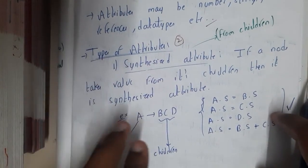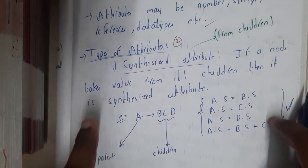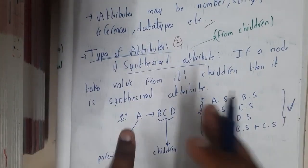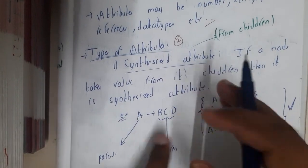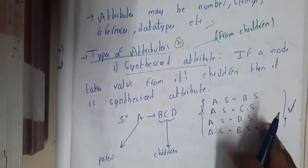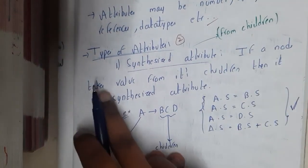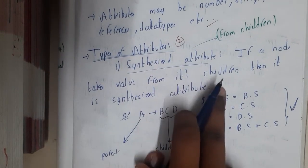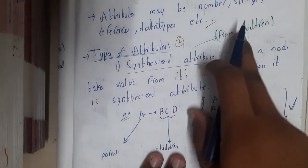Inherited - you will have an idea that it's from parents or somewhere you'll be getting, right? Yes, exactly, you are correct up to some part, but there is some more addition to it. First, let us go to synthesized attributes. If a node takes a value from its children, then it is called a synthesized attribute. For example, A → B C D.